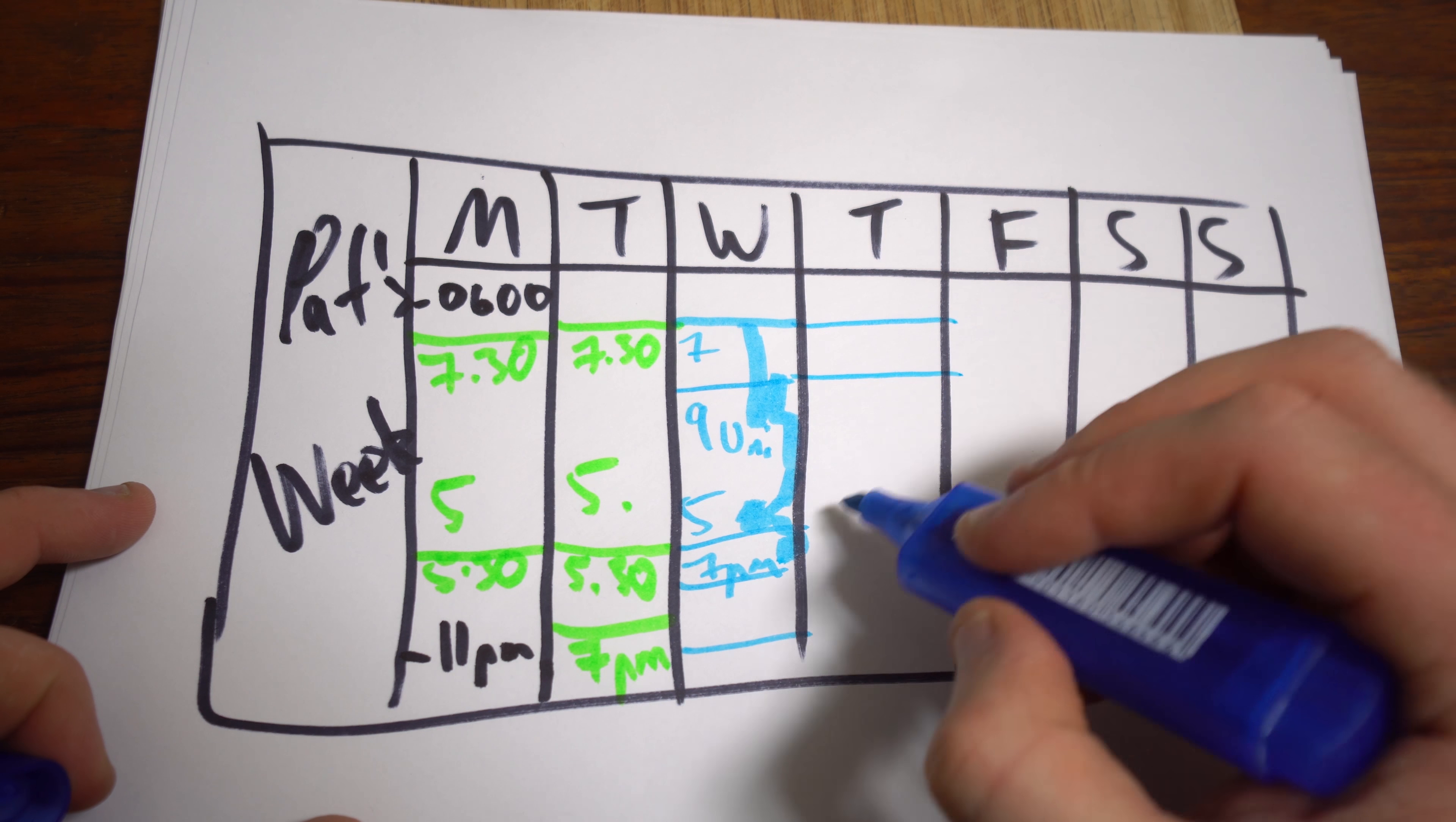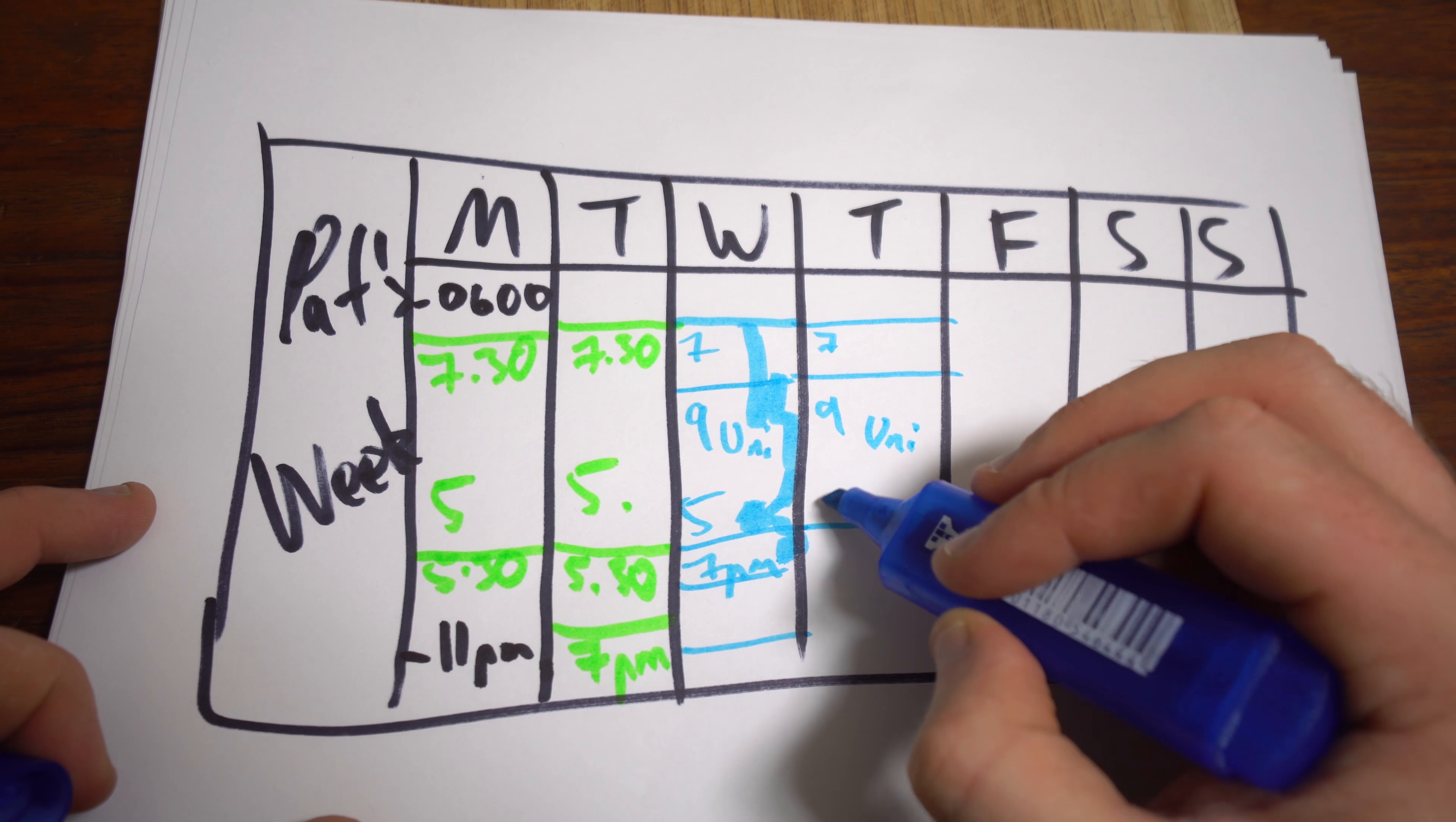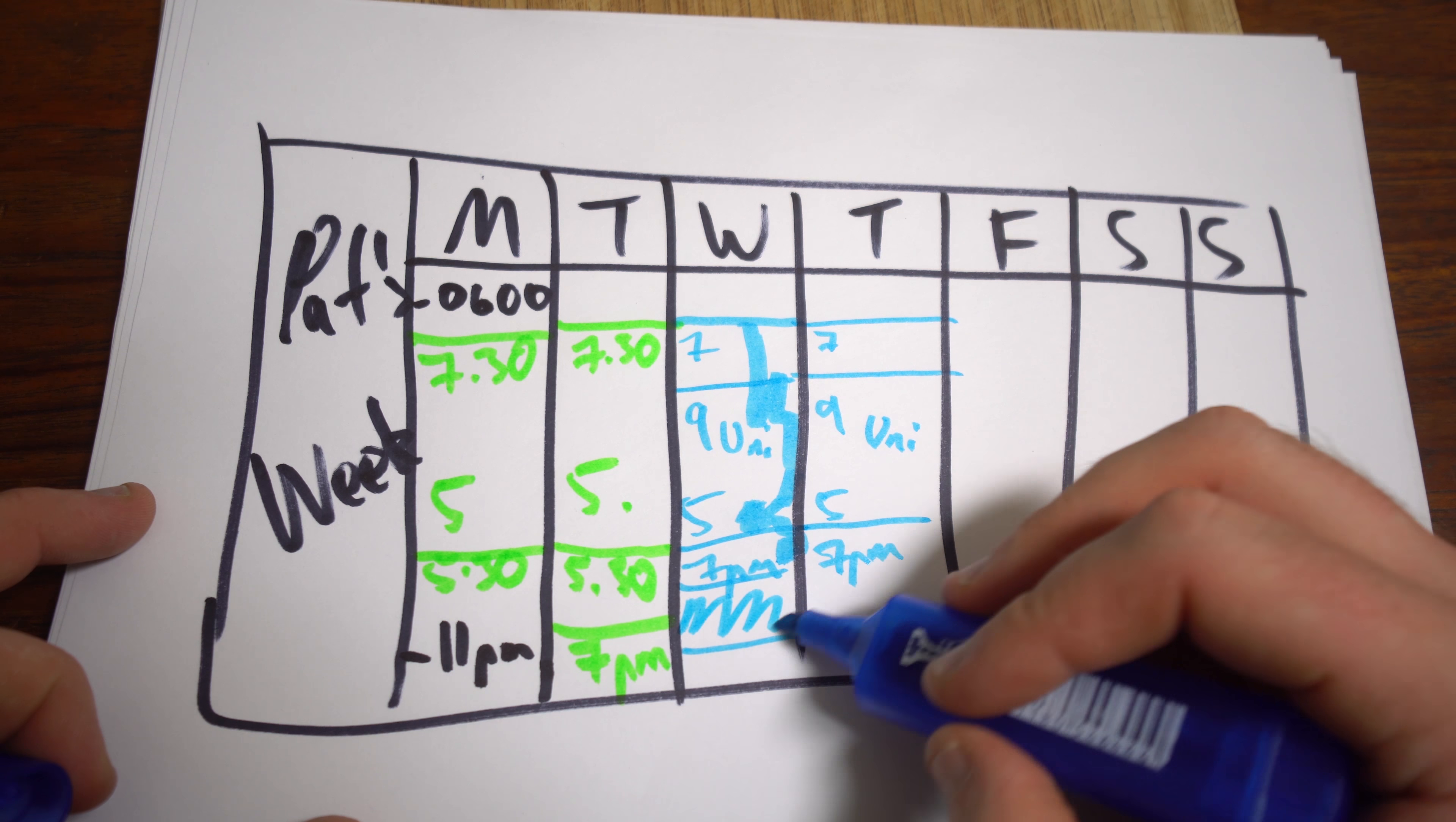Exactly the same thing Thursday. Leave the house at 7:00, uni at 9:00, finish at 5:00, home at 7:00, have dinner, study, bed at 11:00. So all this time is taken up as well.